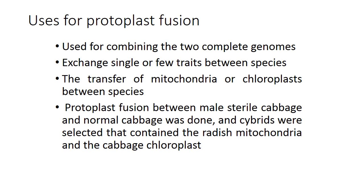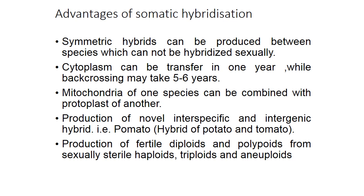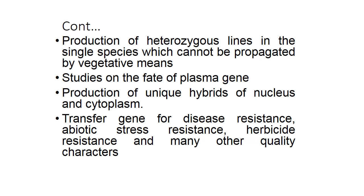Advantages of somatic hybridization: somatic hybrids can be produced between species that cannot be hybridized sexually; cytoplasm can be transferred in one year while backcrossing may take five to six years; mitochondria of one species can be combined with protoplasts of another; production of novel interspecific and intergeneric hybrids such as pomato (potato × tomato); production of fertile diploids and polyploids from sexually sterile haploids, triploids, and aneuploids; production of heterozygous lines; studies on fate of plasmid genes; production of unique nucleus-cytoplasm hybrids; and transfer of genes for disease resistance, abiotic stress, herbicide resistance, and quality characters.